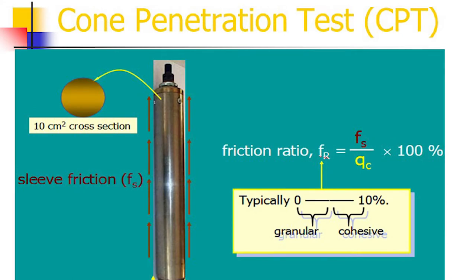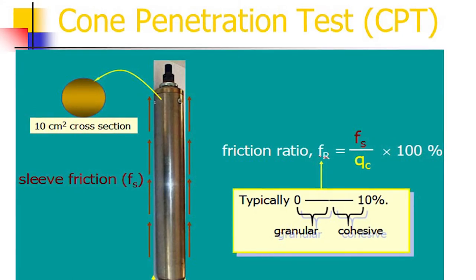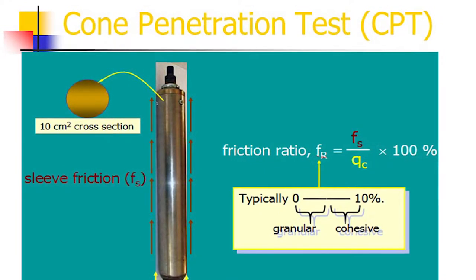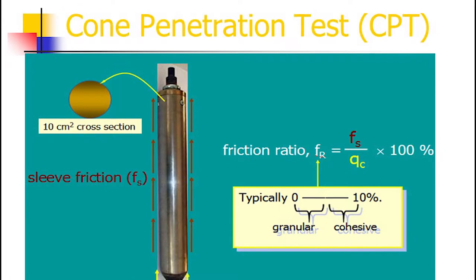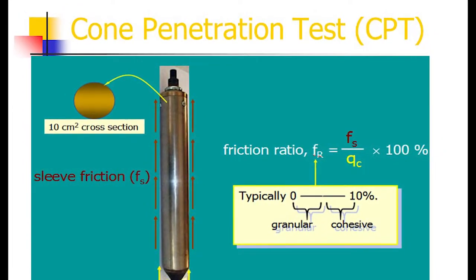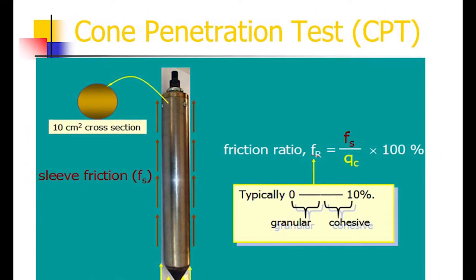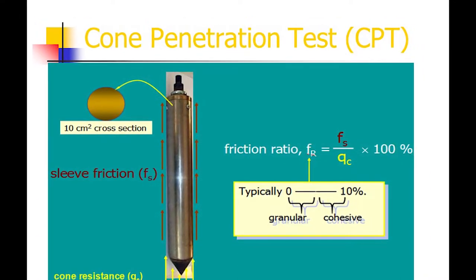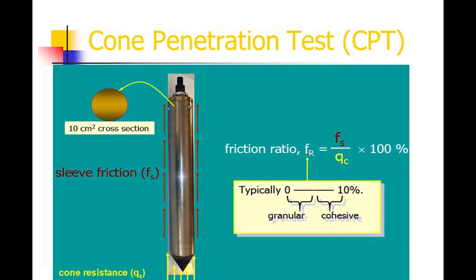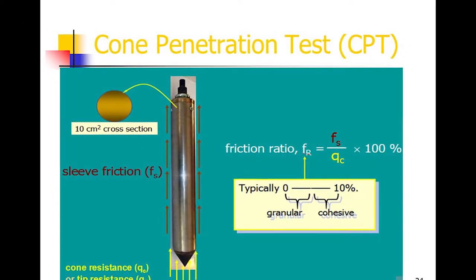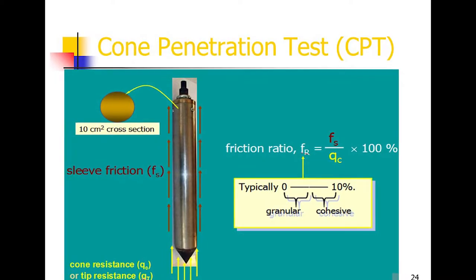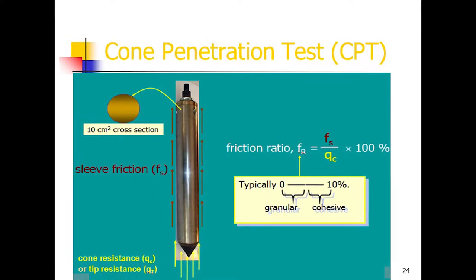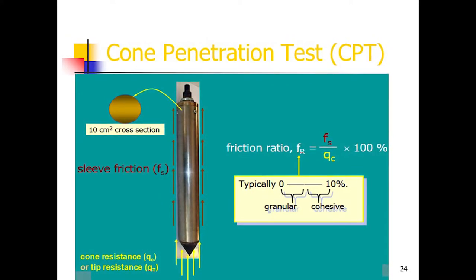In the Cone Penetration Test, cone resistance is QC, tip resistance is QT, and sleeve friction is FS. The friction ratio FR = (FS / QC) × 100%. The cone has a 10 cm² cross-section. Typically, the friction ratio FR is 0 to 5% for granular soils and 5 to 10% for cohesive soils.